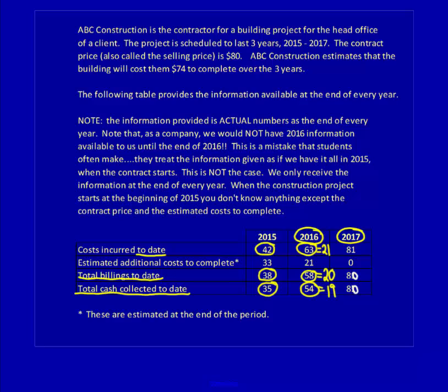Remember that we would only do the chart at the end of the year after we have made the other three entries. As in 2016, let's do all three entries first because they are made continually throughout the year. First, record the costs incurred on the project. We have to calculate the current year's cost to make this entry.